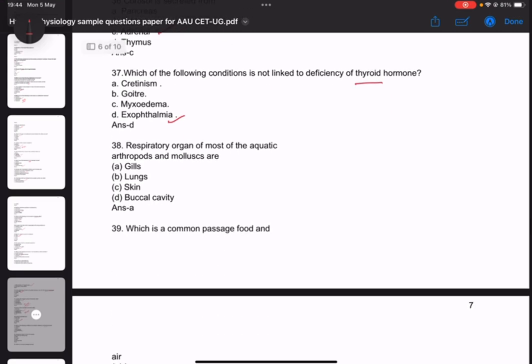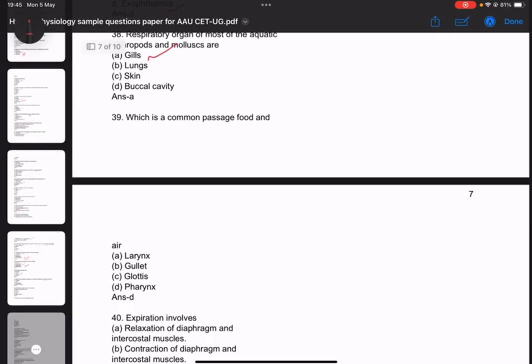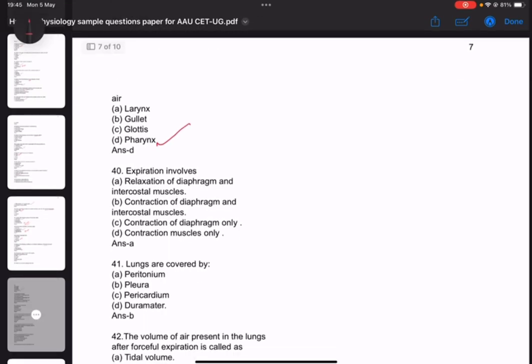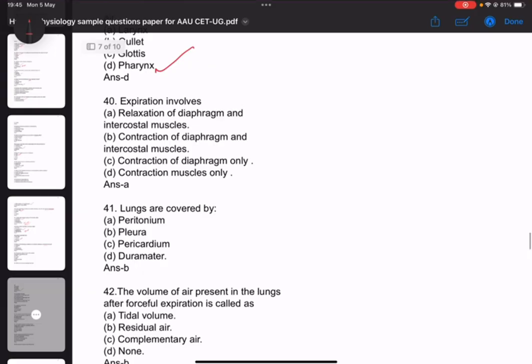Question thirty-six: Which condition is not linked to deficiency of thyroid hormone - answer is exophthalmos. Question thirty-seven: Respiratory organ - these are mainly factual questions, direct answers when you know them. Question thirty-eight: Common passage for food and air - answer is pharynx. Question forty: Expiration involves relaxation of diaphragm and intercostal muscles. Lungs are covered by pleural membrane.